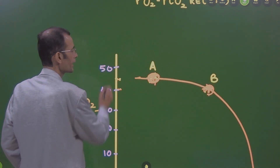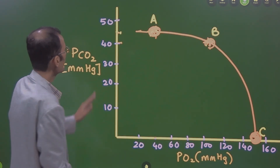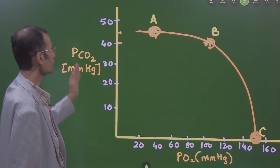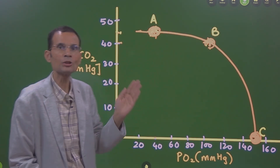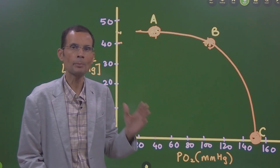Let us see the graph. On the vertical axis, we have PCO2 in the alveolar air —